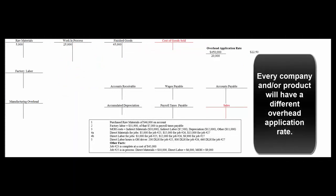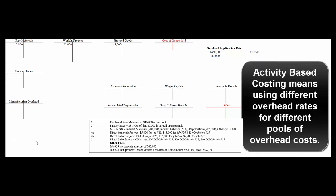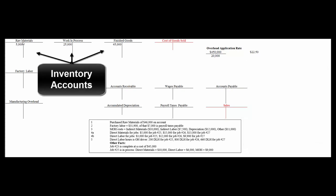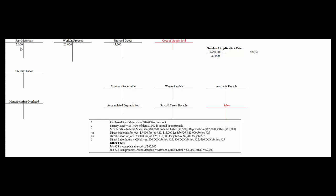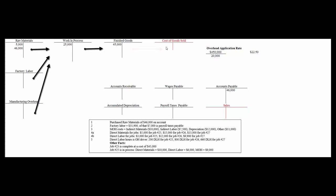Different companies have different rules for different products. Later on, we'll encourage companies to use multiple rules called activity-based costing to do the best job possible of applying overhead to specific jobs. The problem tells us they started with a $5,000 balance in raw materials — that's an inventory account with a debit balance. First, they buy $46,000 of raw materials on account: debit raw materials $46,000, credit accounts payable $46,000.